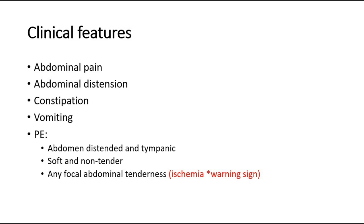The presence of focal abdominal tenderness should be assessed, as focal tenderness indicates ischemia and is a key warning sign. The differential diagnoses are mechanical obstruction, paralytic ileus, and toxic megacolon.